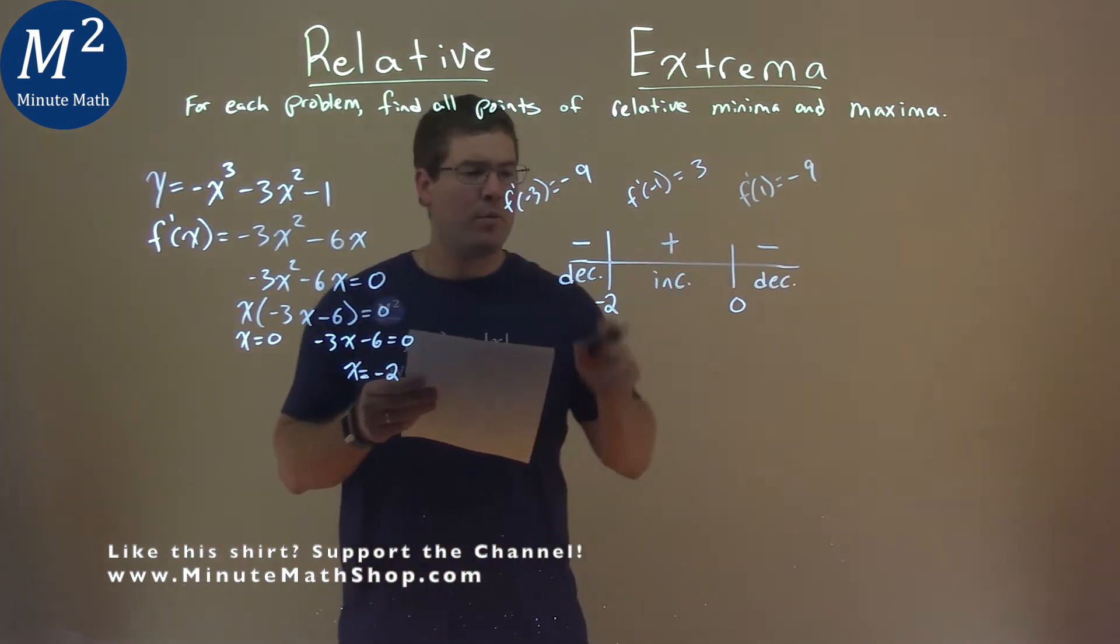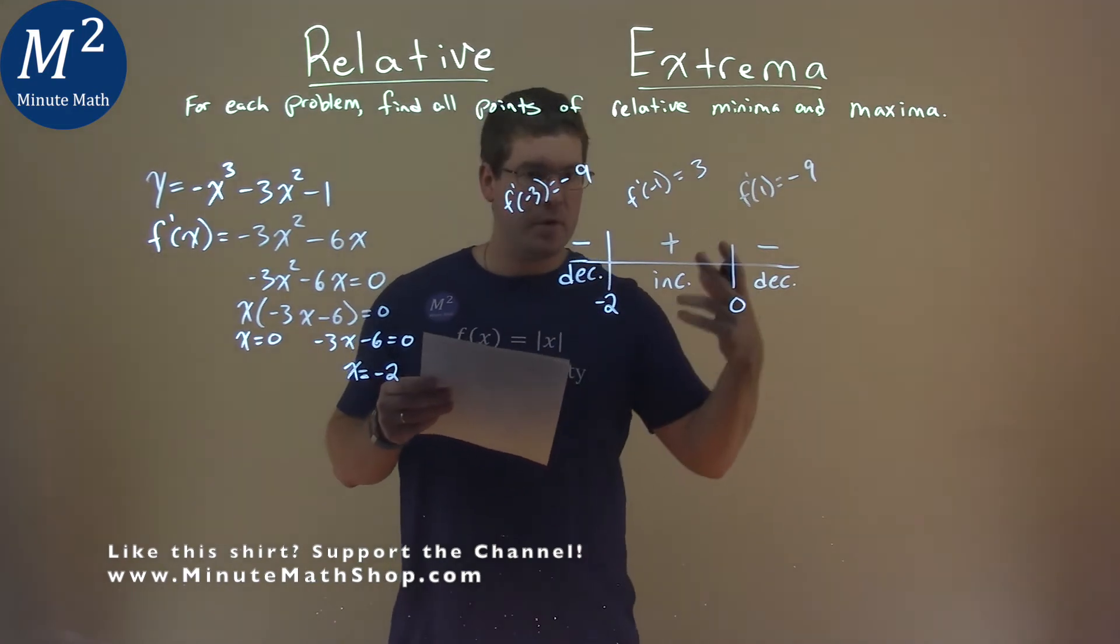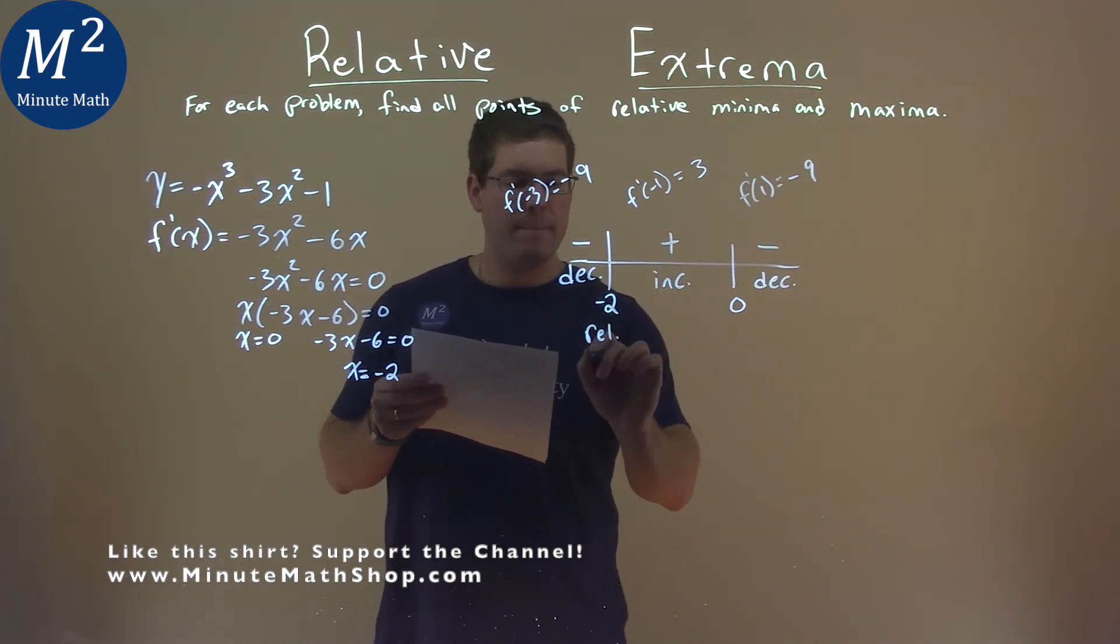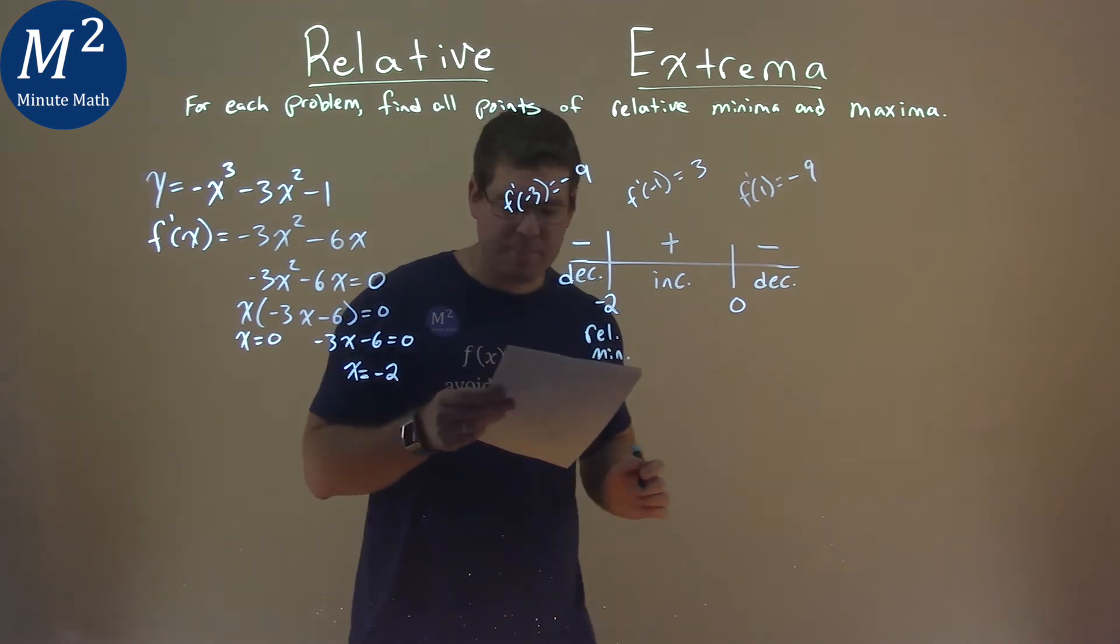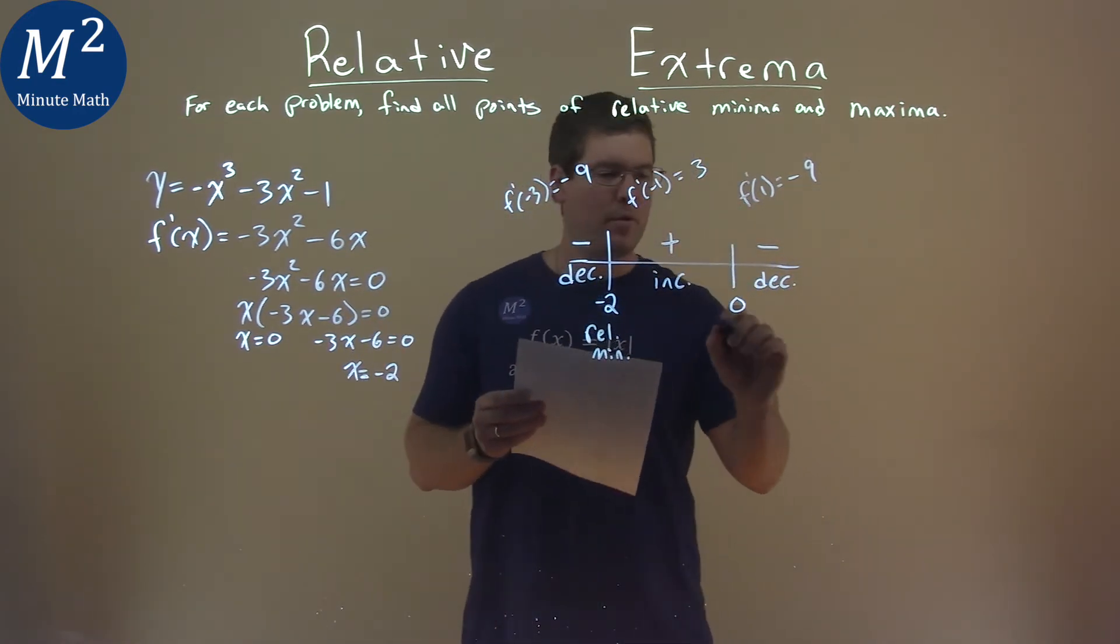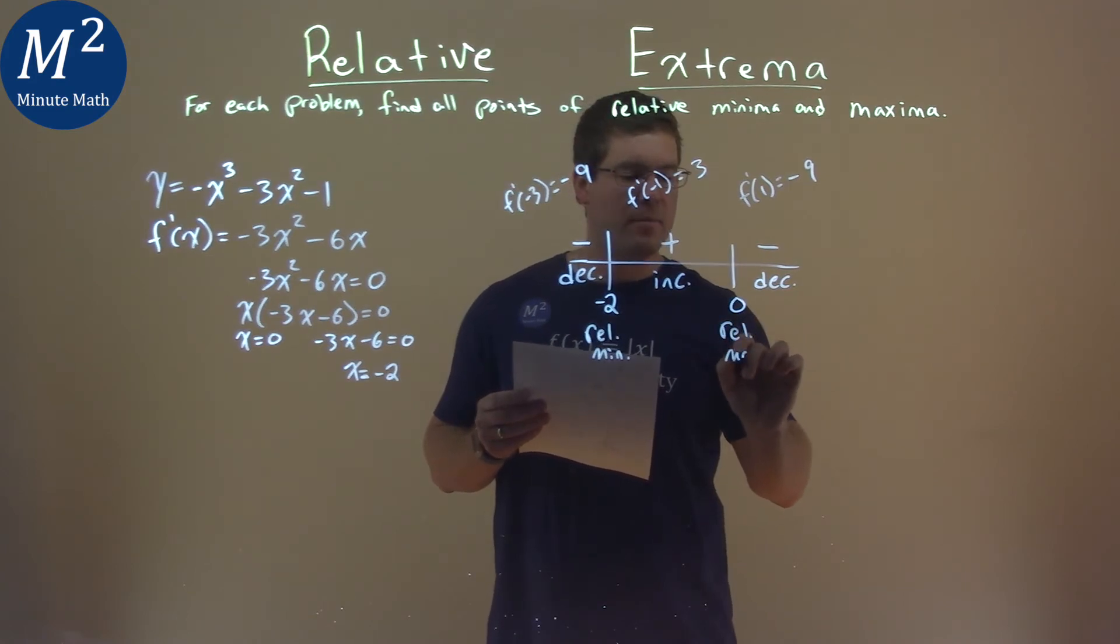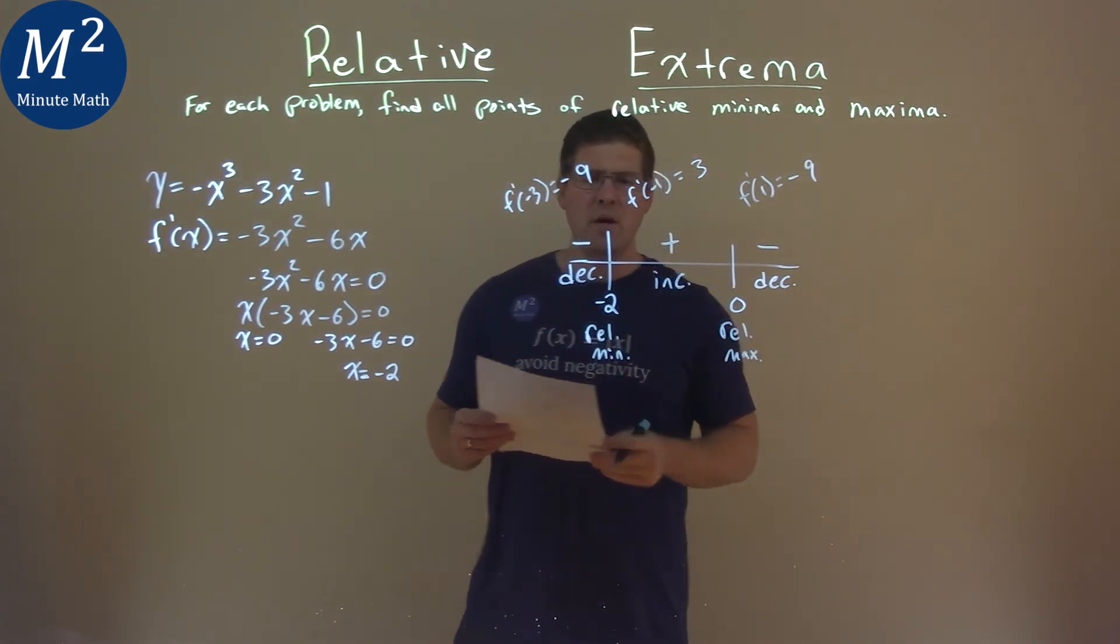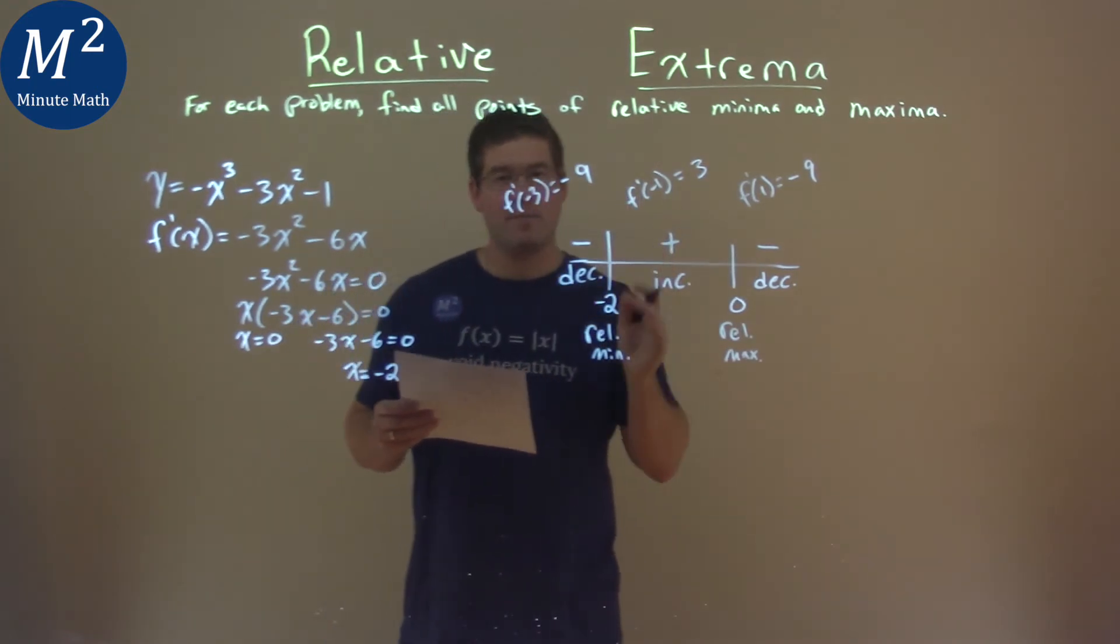When we have a point where we're decreasing then increasing, that means our function has a relative minimum right there. If the function is increasing then decreasing, we have a relative maximum right there. So we have relative min and relative maximum identified.